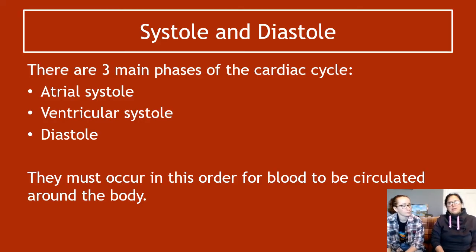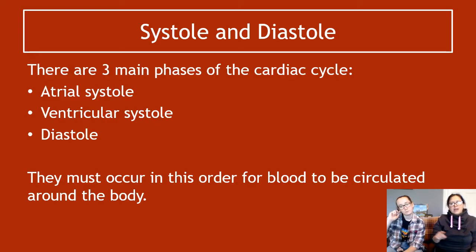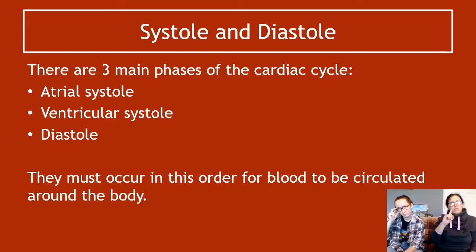An exam question that appears about this is usually these three phases put into a table showing how long each one takes. So atrial systole takes 0.1 seconds, ventricular systole takes 0.2 seconds, and diastole takes 0.4 seconds. They ask you: what's the heart rate of this individual? You add up all three phases — that's one heartbeat — and then you know how long one heartbeat takes, so you can work out how many heartbeats occur in 60 seconds.